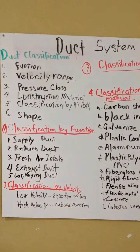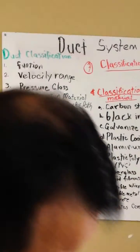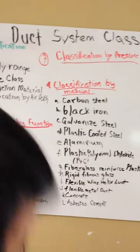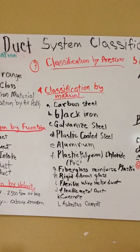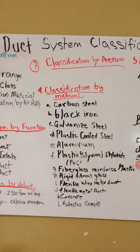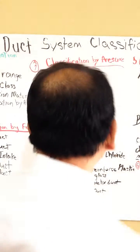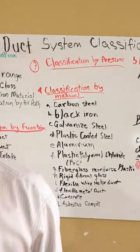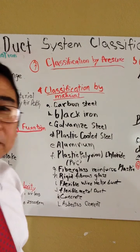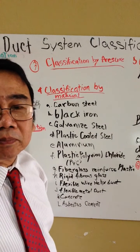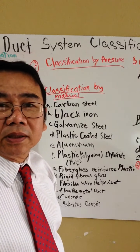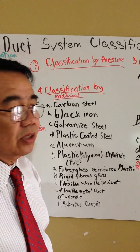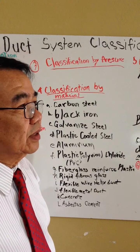The next classification will be about pressure. You can read the book and get more from the reference material on that. Then we're going to talk about classification by material. Different ducts will use different types of material depending on the purpose of the air being used inside the system to meet the environmental requirements.